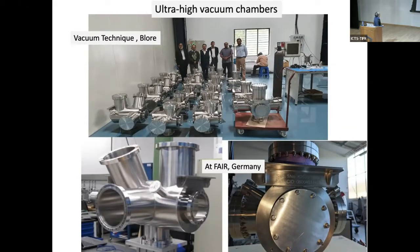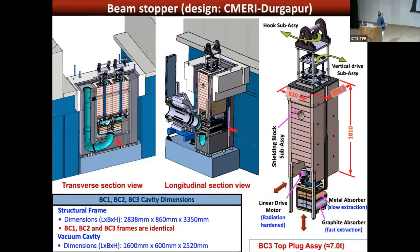The beam stopper is a critical device — if the uranium beam falls on it, it deposits enormous energy like an explosive device, so it requires proper cooling. This design was done completely by the Central Mechanical Engineering Research Institute in Durgapur, a CSIR laboratory. The design is complete and the purchase order has been issued.